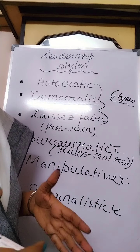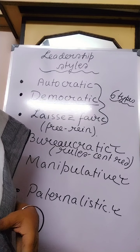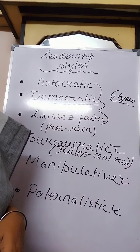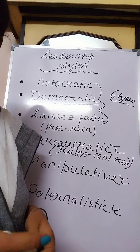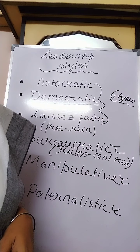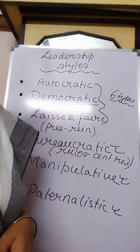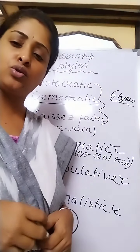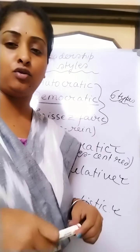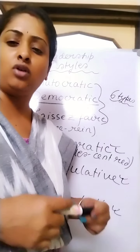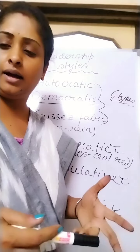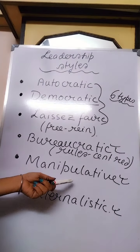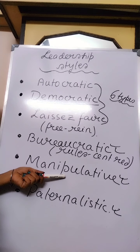Manipulative leadership is effective only when cooperation and coordination have to be achieved on an urgent project. It is also suitable when highly motivated employees are needed for a short-duration project. However, manipulative leadership is not effective when employees are of a low profile and not so ambitious — manipulation cannot work where employees are not efficient or ambitious enough.